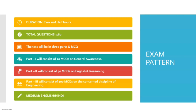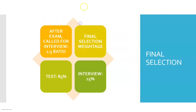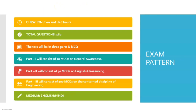The test will consist of three parts and all questions will be MCQ based - there is no descriptive examination. Part one consists of 20 MCQ questions from general awareness. Part two has 40 questions from English and reasoning. Part three consists of 100 questions on the concerned discipline of engineering, so whichever branch you belong to, you will answer questions from your respective branch.